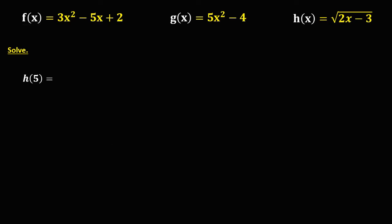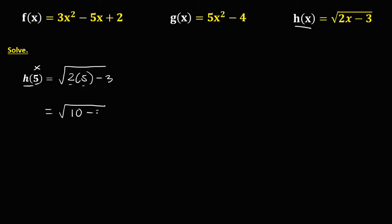For h(5): from h(x), x is equal to 5. So we have the square root of 2 times 5 minus 3. Simplify: 10 minus 3, that's the square root of 7. Therefore, h(5) is equal to √7.